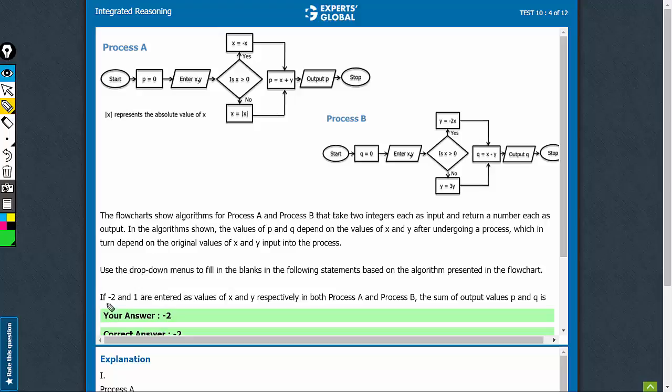First part of the question says, if minus 2 and 1 are entered as values of x and y, in both processes, the sum of output values p and q is.